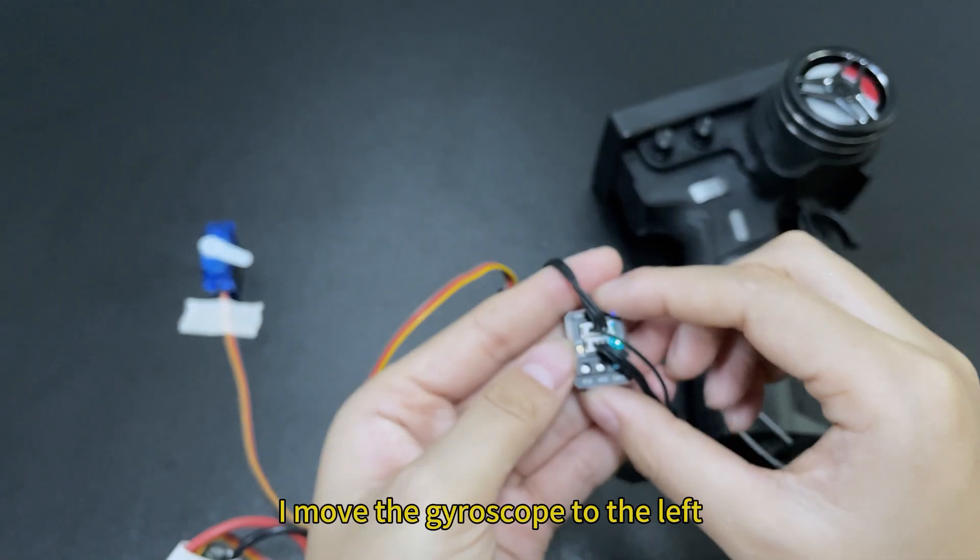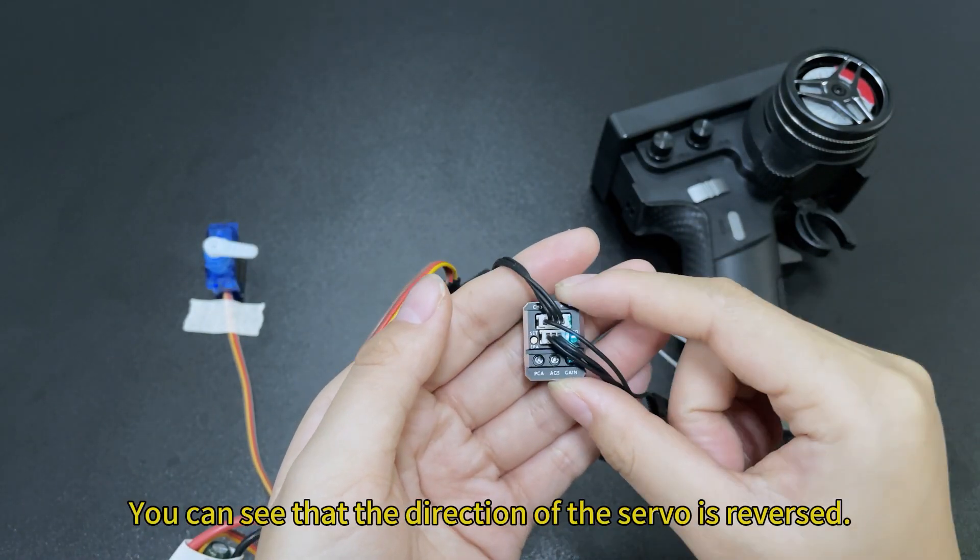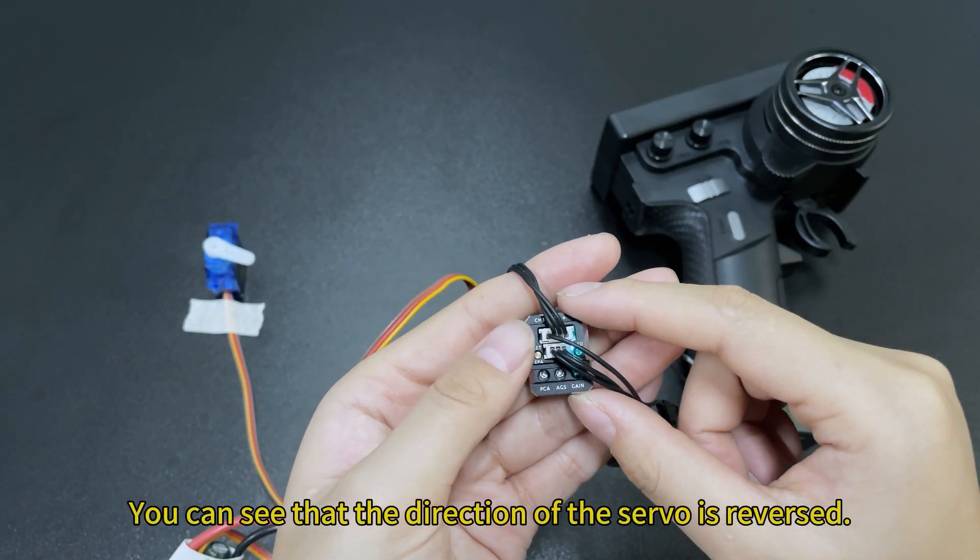I move the gyroscope to the left. You can see that the direction of the servo is reversed.